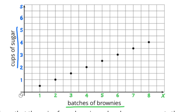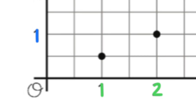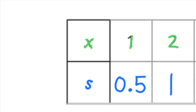Along the bottom of this graph, you can see that the batches of brownies are identified. On the left-hand side, the cups of sugar are identified. Look at the first point in the lower left-hand corner, just above the 1 — that represents one batch of brownies and it lines up with a half a cup of sugar. The second point is directly above the 2, representing 2 batches of brownies, and that lines up with 1 cup of sugar. The X coordinate for the first point would be 1 and the S coordinate would be 5 tenths.